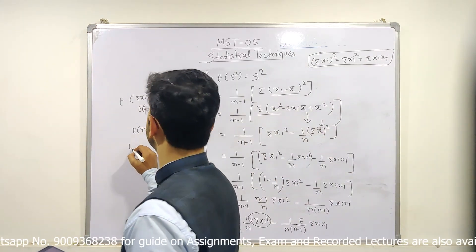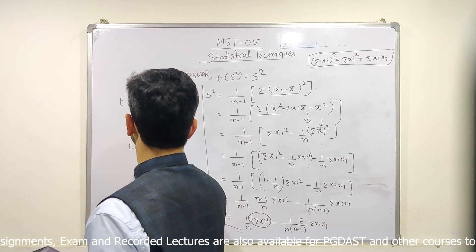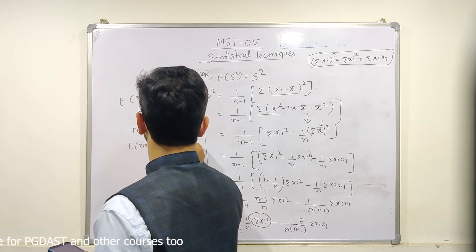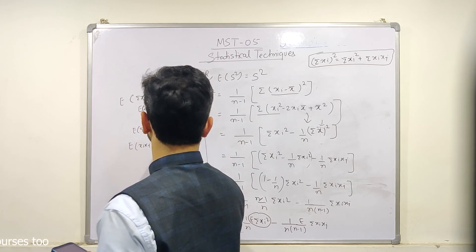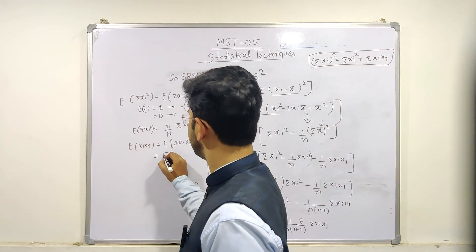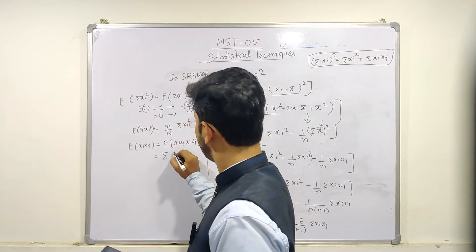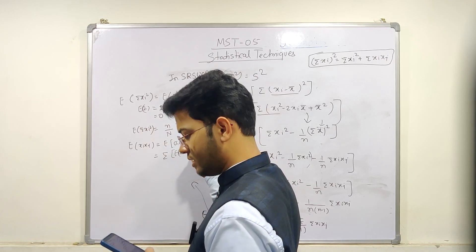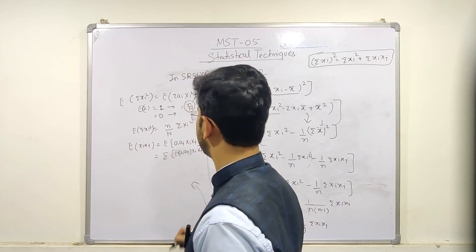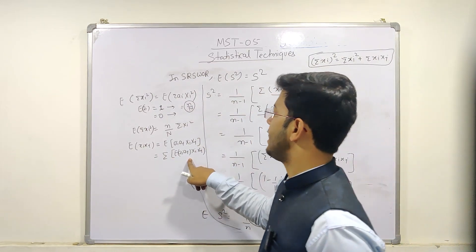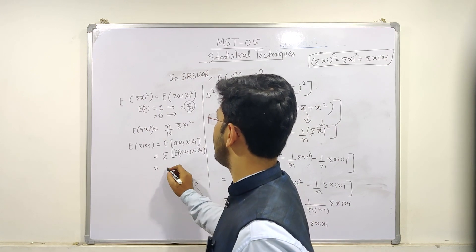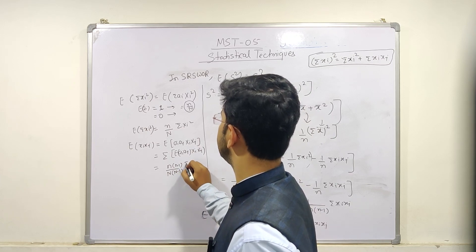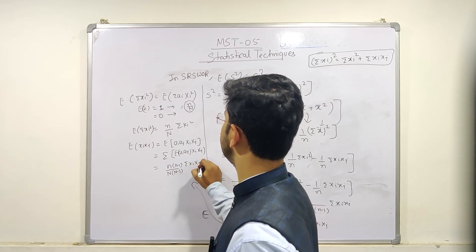The next value needed is E(xi·xj), which equals E(ai·aj·xi·xj). The expectation of ai·aj is n(n−1) divided by N(N−1), so E(Σxi·xj) = n(n−1)/(N(N−1)) times Σxi·xj.